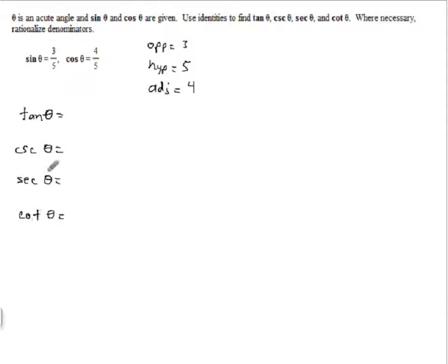So, the tangent, TOA, is opposite over adjacent. So, that is 3 over 4. The cosecant is simply the flip or the reciprocal of the sine. So, that is 5 over 3. The secant is the flip of the cosine. So, that is 5 over 4. And the cotangent is the flip of the tangent, 4 over 3.